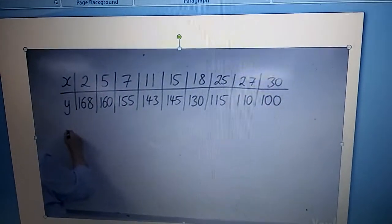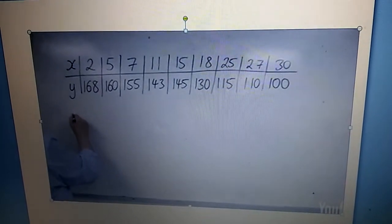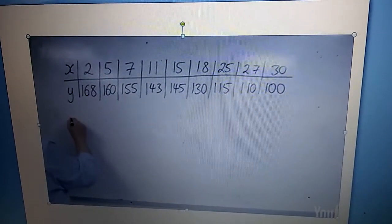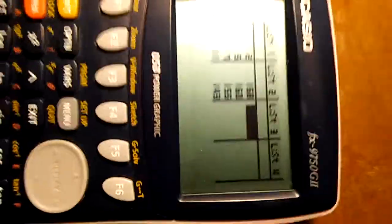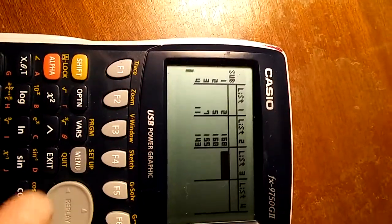So I've done this over here. As you can see, the X numbers in list 1 and the Y values in list 2.